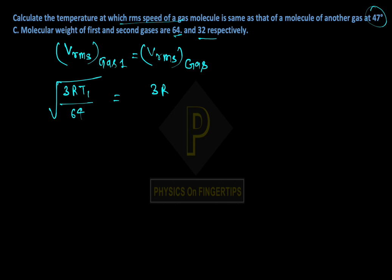3R·T2. T2 is 47 degrees Celsius, which can be written as 320 Kelvin, upon molecular weight 32. Putting these values,